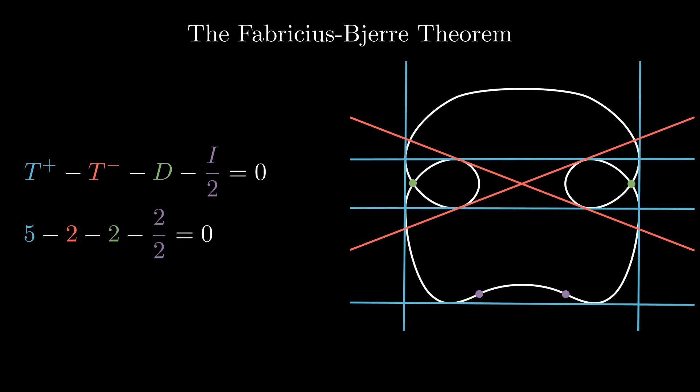And come on, if this fact isn't at least a little surprising to you, then you have no heart. To me, it doesn't even seem like bitangents, double points, and inflection points carry enough information to be related to one another without some other variable tossed in there.